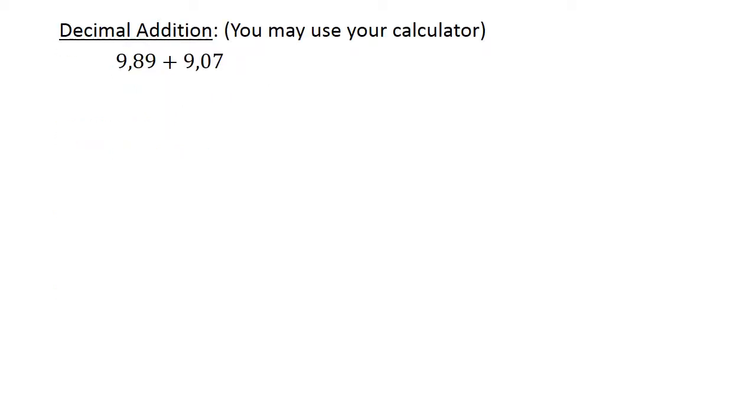Decimal addition. 9.89 plus 9.07. You may use your calculator. Equals 18.96.